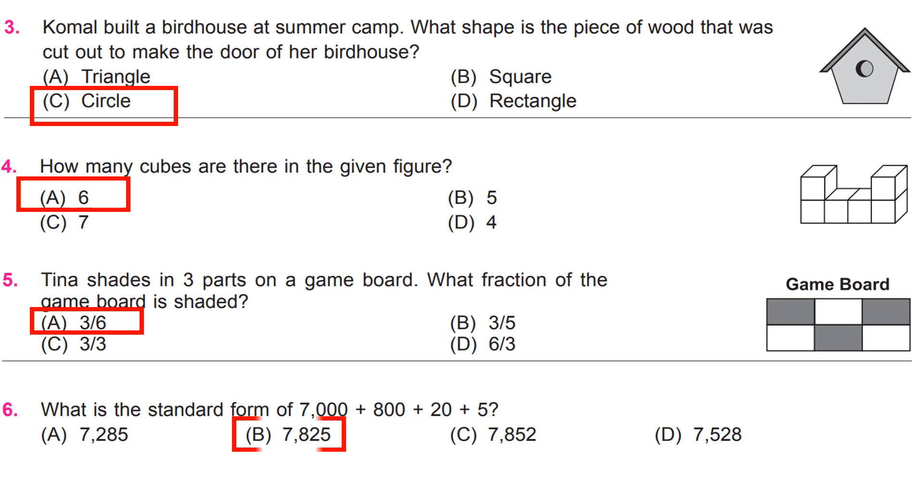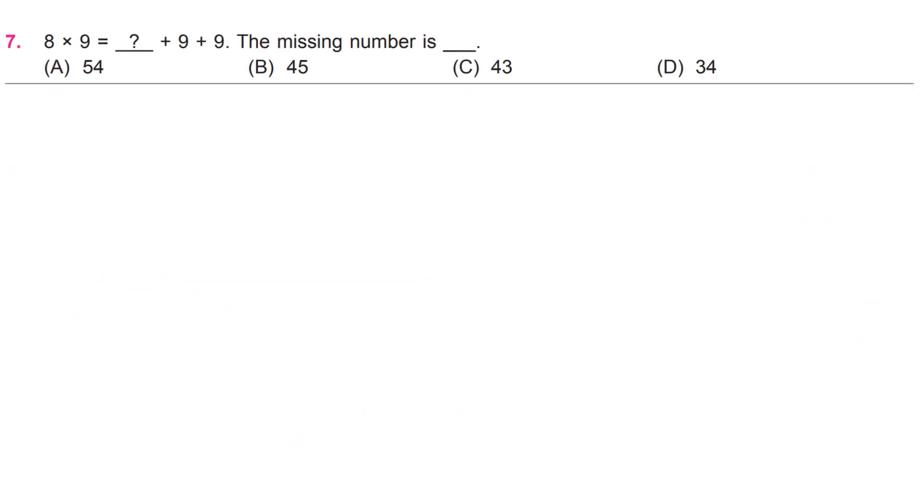B, 7825. 8 multiply 9 equals plus 9, plus 9. The missing number is A, 54.